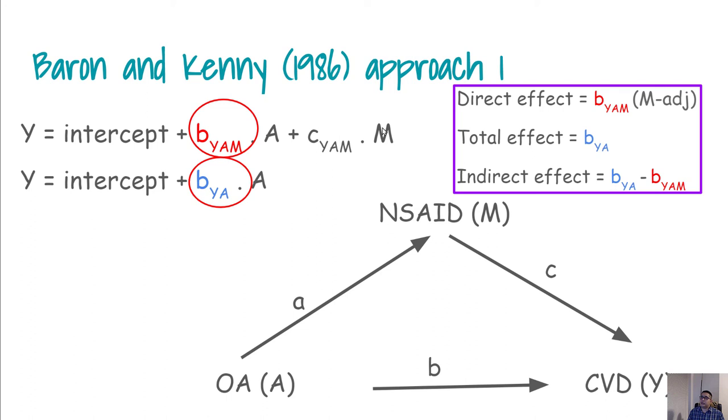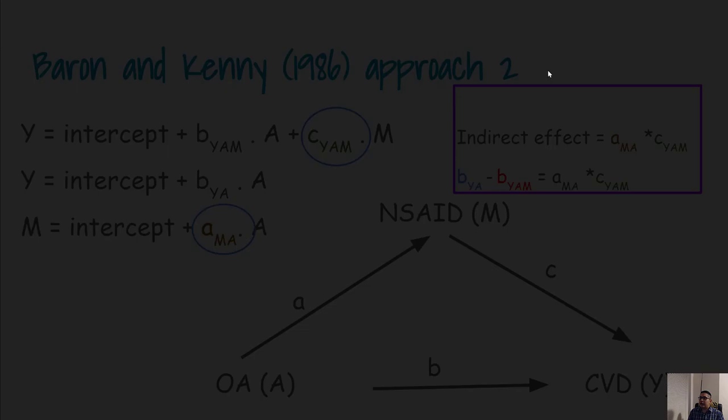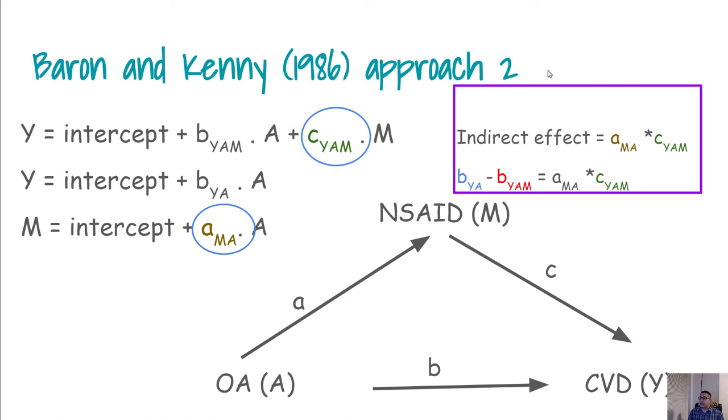So what is our indirect effect? Indirect effect is going to be the difference between these two, so we are getting the subtraction to get the indirect effect. All right, so this is the first approach by which we can calculate our indirect effect. This is known as approach one.